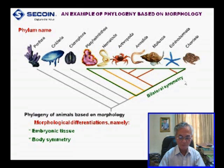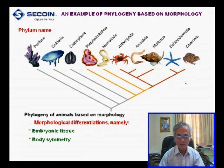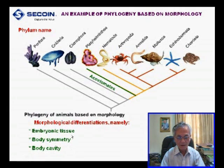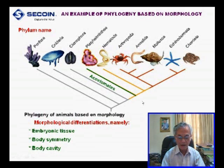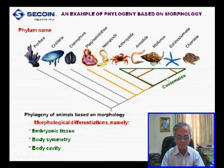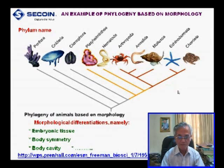The third differentiation is body cavity. This taxon has acoelomate, and another taxon has acoelomate as well. Some taxa have pseudocoelomate, and others have a true coelom. For more information about this example, please visit this link.